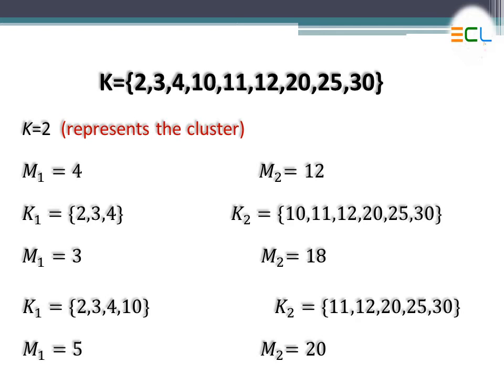If you are taking k equal to 3, then you would select three values as means: m1, m2, and m3. For this scenario with m1 equal to 4 and m2 equal to 12, in the next step you check each object. The first object is 2 - you check whether 2 is closer to m1 or m2. You can see that 2 is more closer to m1 compared to m2, so it becomes part of cluster k1. Then you check the distance between 3 and m1 versus 3 and m2.